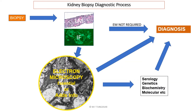Let us look at the whole kidney biopsy diagnostic process. The biopsy is taken and we have to reach a morphological diagnosis. At this stage, the biopsy is sent to the lab; it is processed for light microscopy and immunofluorescence microscopy. Some labs will do immunoperoxidase instead of immunofluorescence.